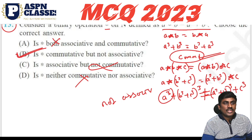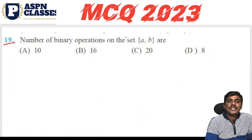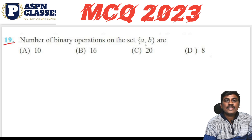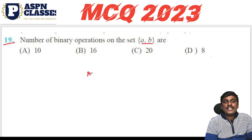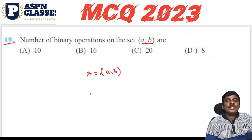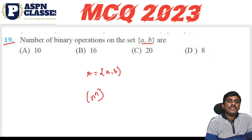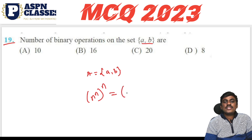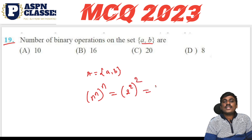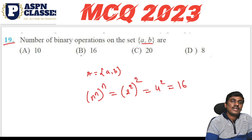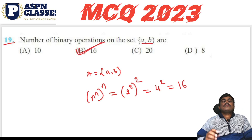Question 19: Number of binary operations on the set {a, b}. The formula is n^(n²), where n is the number of elements. Here n = 2, so it is 2^(2²) = 2^4 = 16. The correct option is B.